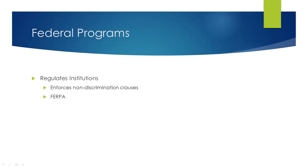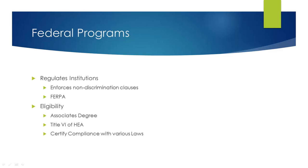In terms of federal programs, FERPA and other non-discrimination clauses are regulated through financial aid — it's the way the federal government regulates institutions. An institution is eligible for financial aid by offering a minimum of an associate's degree, or the equivalent, that meets federal requirements for program length. They promise to comply with the Higher Education Act, Title VI specifically, which authorizes the federal student assistance program and creates all regulations an institution must follow. They must also certify compliance with various laws such as the Clery Act, Campus Security Act, and Student's Right to Know. All of this is done through a certifying agreement between the Secretary of Education and the institution.